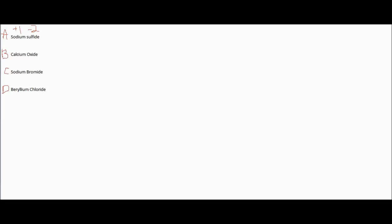Here we have plus 1 and negative 2. The easy way to do it is to think, how would we balance these? You could have 2 plus 1s and 1 negative 2, and that would end up equaling 0, and that would balance them.